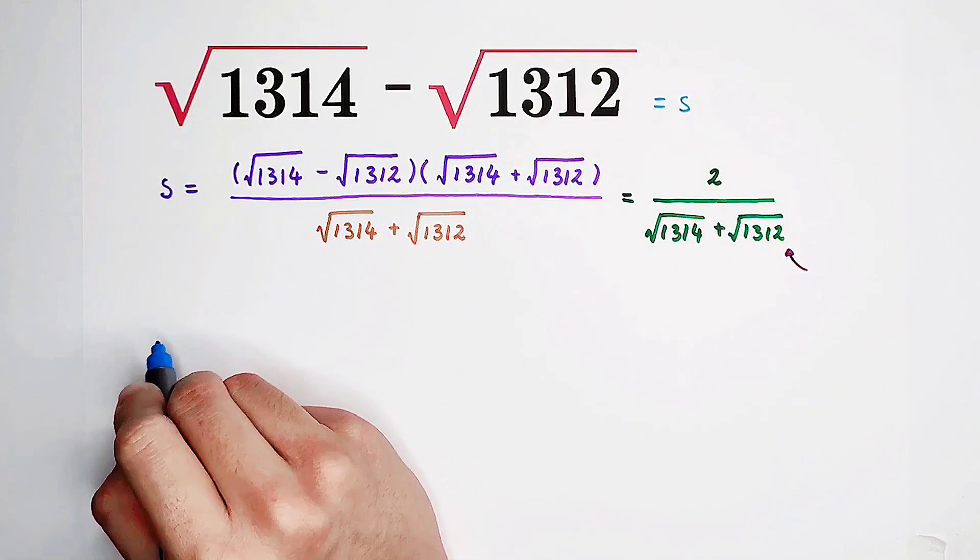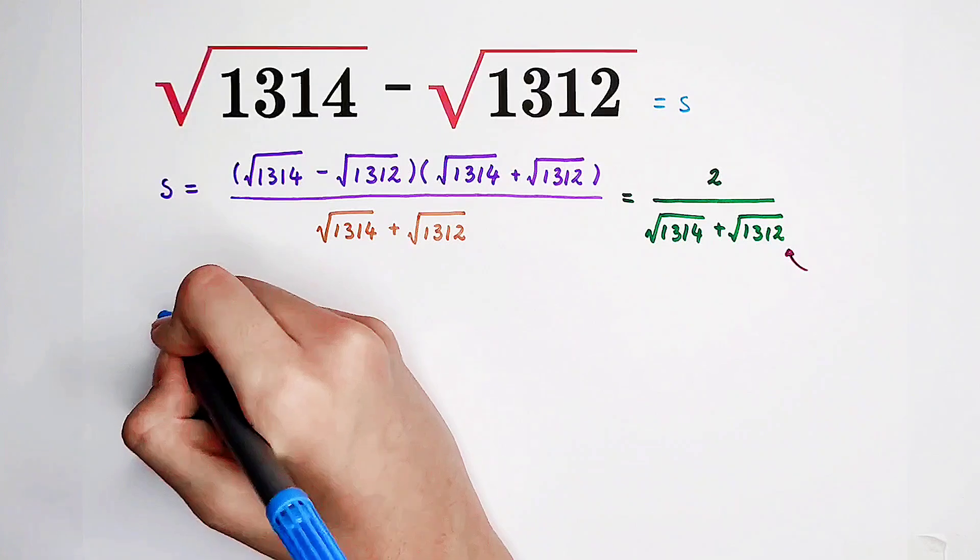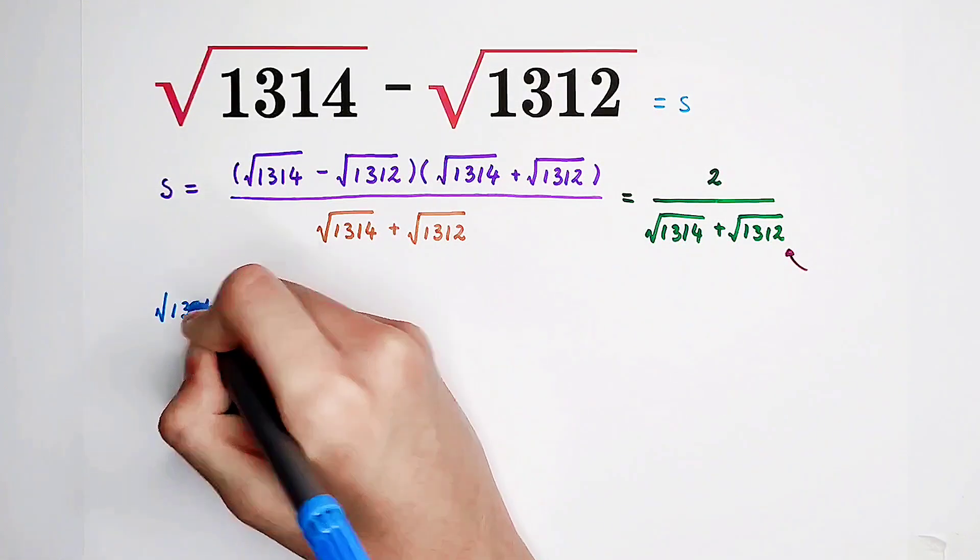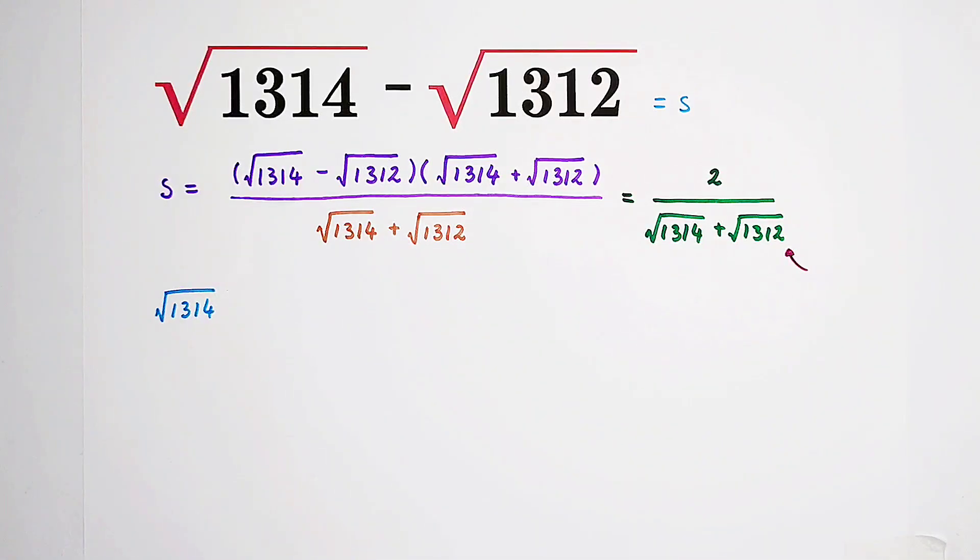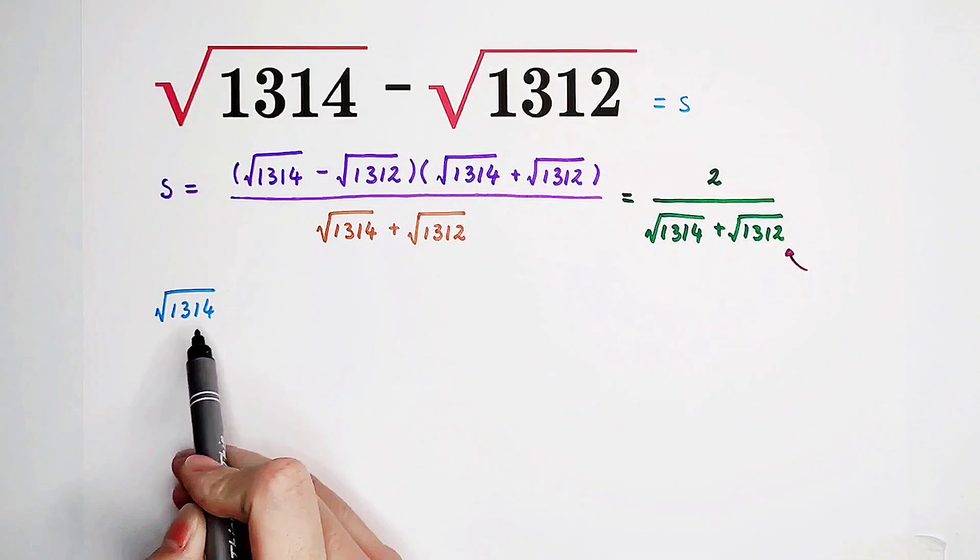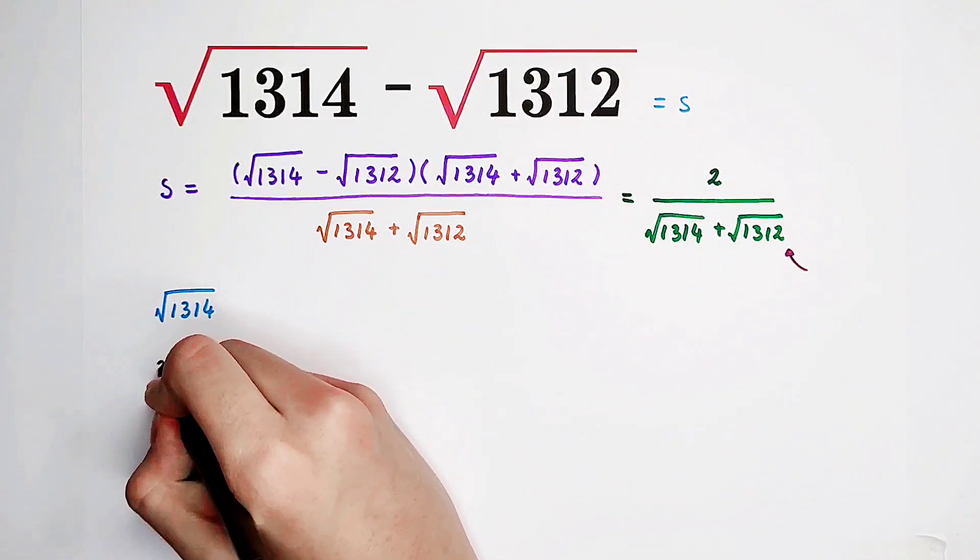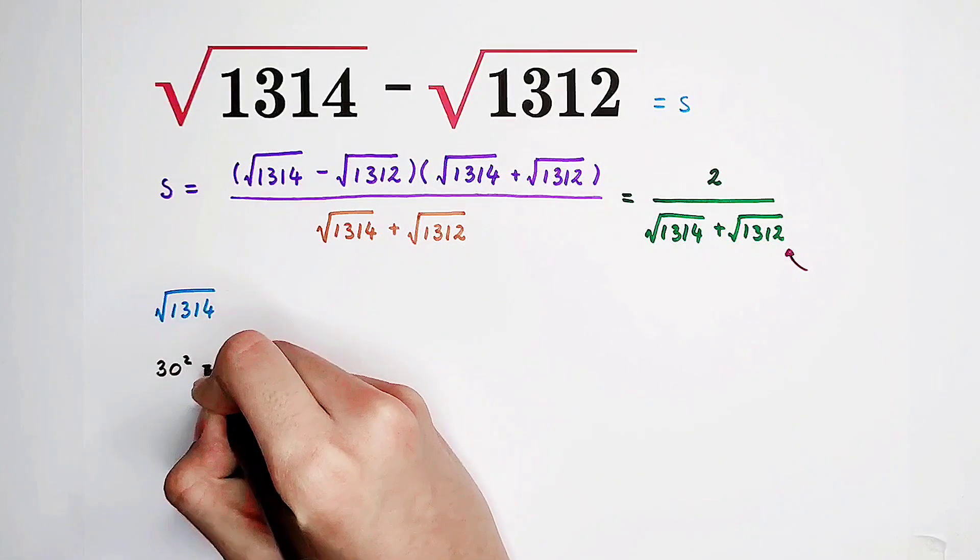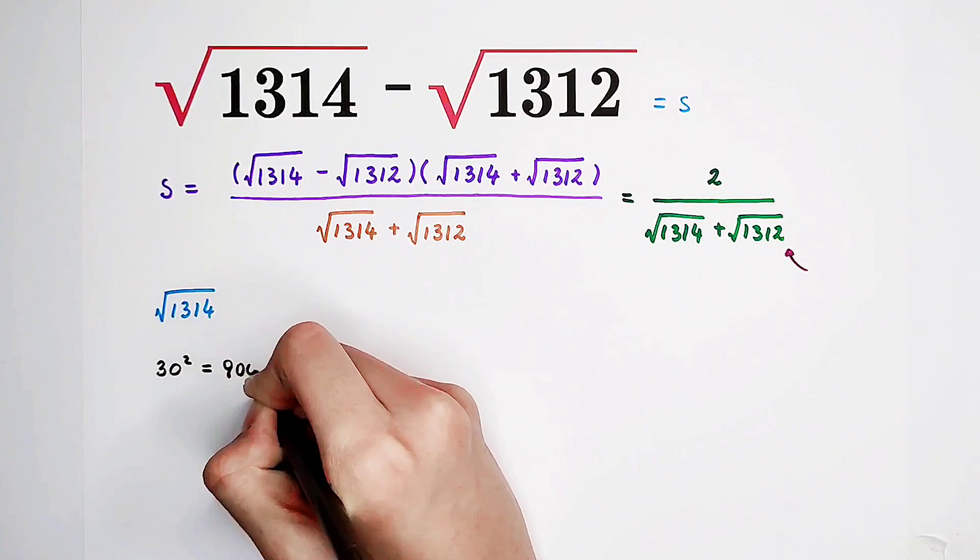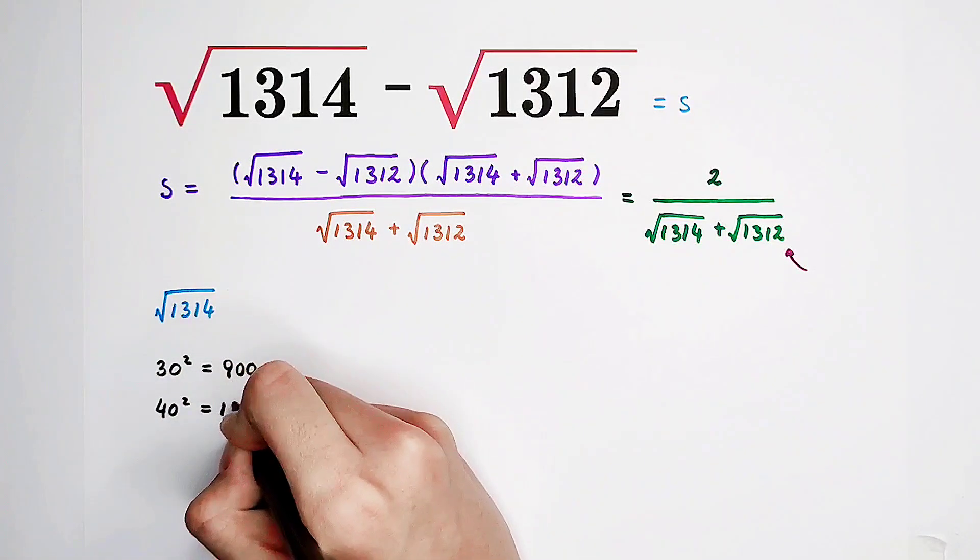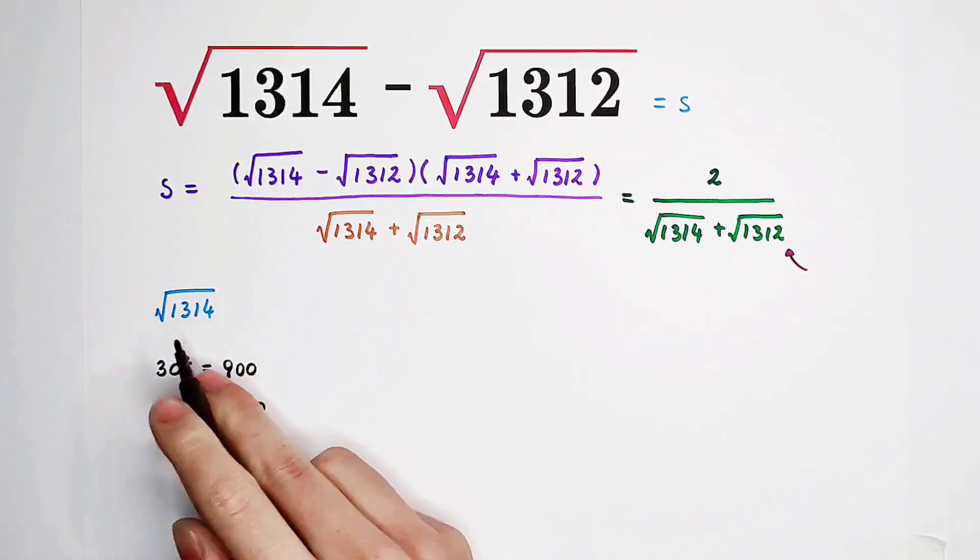So now our first job, our first work is to approximate square root of 1314. How can we do that? We can firstly use integer approaching this number under the root. So now, firstly, 30 squared, it is actually 900. And 40 squared is 1600. And it is bigger than this.